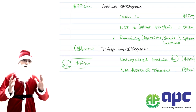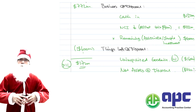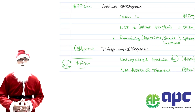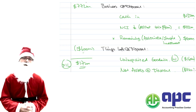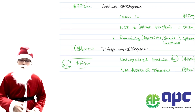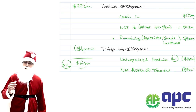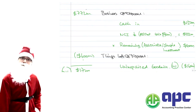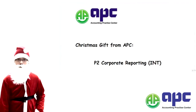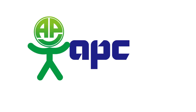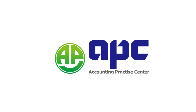We have to de-recognise all of the assets, liabilities, income and expenses of Nothing Limited because we no longer have control over it. At the same time, we account for Nothing Limited as an associate using the equity accounting method. This is rather complicated in the Paper 2 exam. Hope you're happy with this section on the mnemonic BT — just a personal gift for you. Good luck with your Paper 2 exam. APC — accounting for your future.